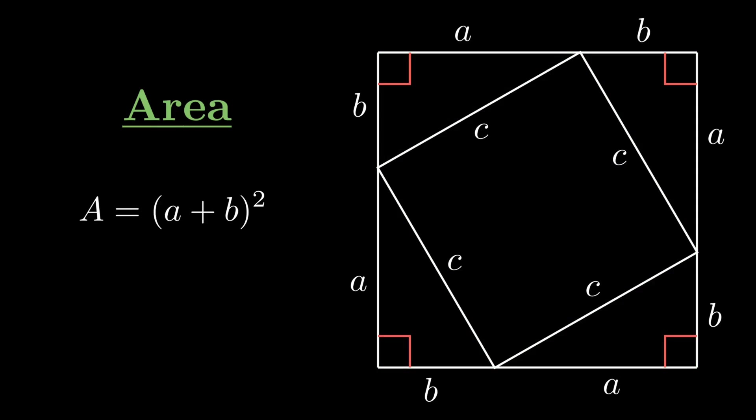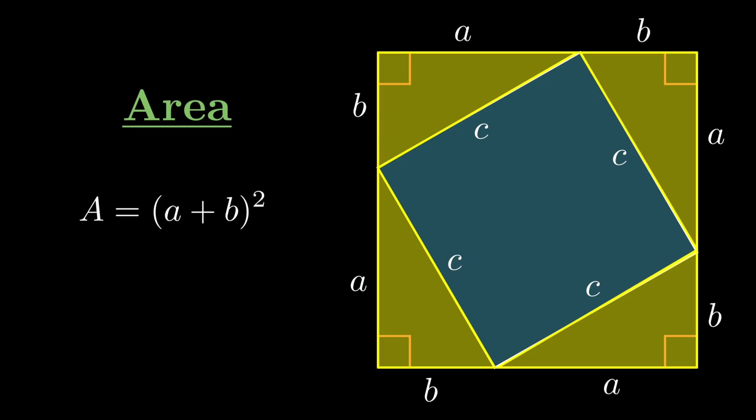meaning the area of the four right triangles plus the area of the small square equals the area of the big square. The area of the big square is A plus B squared, since each side has a length of A plus B. The area of the small square is C squared.